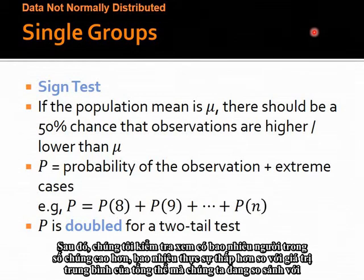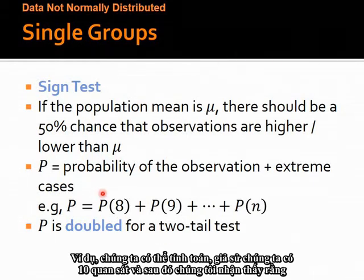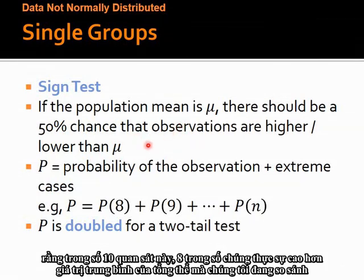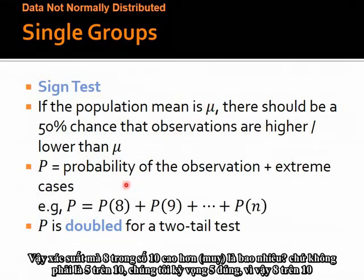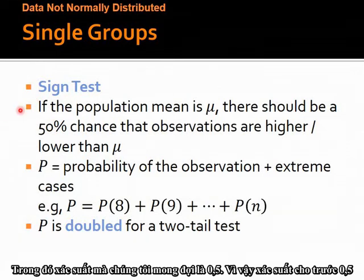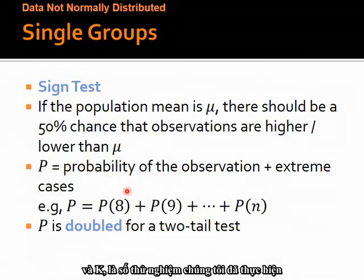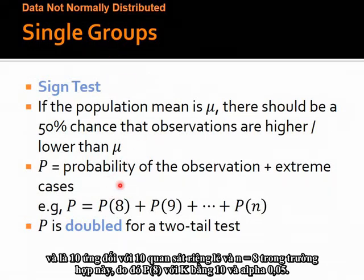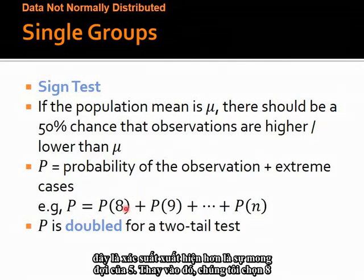For example, if we have 10 observations and 8 of them are higher than the comparison mean, what's the probability that 8 out of 10 are higher rather than the expected 5 out of 10? This is a binomial type distribution where the expected probability is 0.5. Given probability 0.5 with k equals 10 individual observations and we observe n equals 8, we calculate the probability of 8 occurring. However, we also need to add in more extreme cases — probability of 9 occurring and probability of 10 occurring — then add all these together to get a p-value.